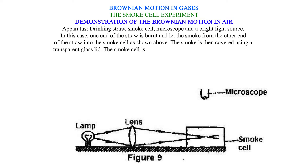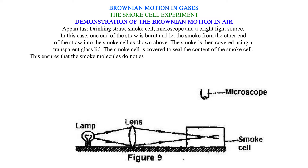The smoke cell is covered to seal the content of the smoke cell. This ensures that the smoke molecules do not escape. The lid is transparent to allow for easy visibility of the smoke cell.